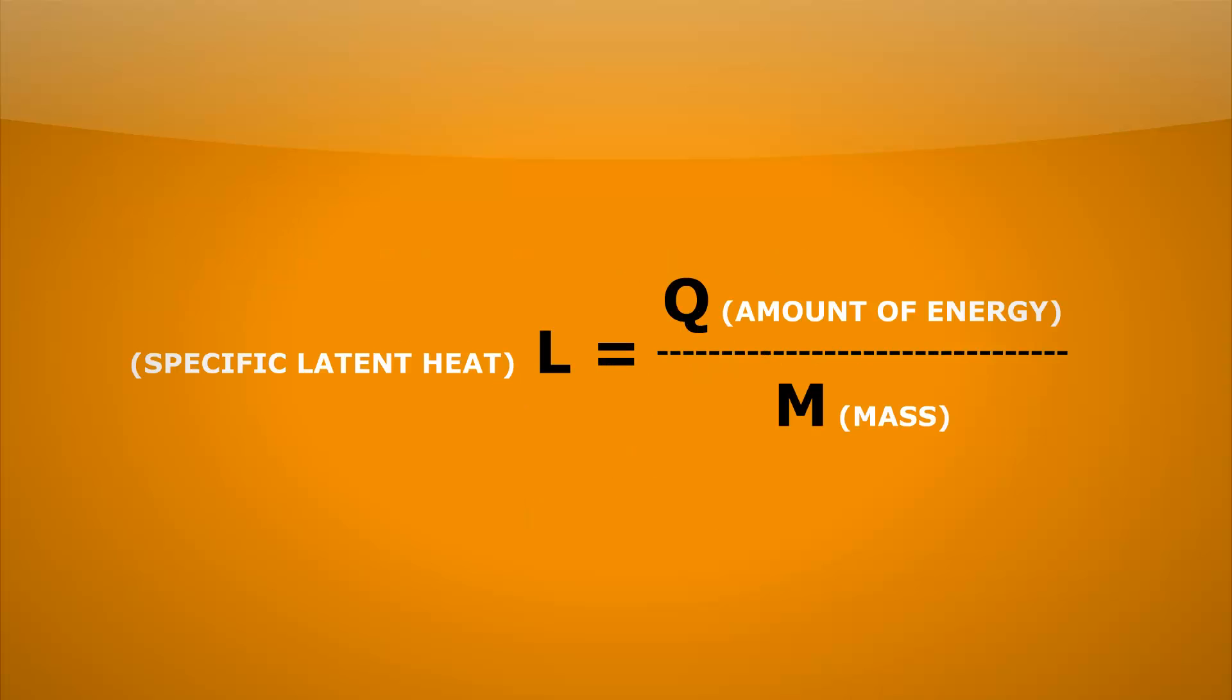So if we think about it, the energy needed to change the state of a given mass is given to us by the mass of that substance times by its specific latent heat. And specific latent heat is not only different for different substances, but has different values for melting and boiling. But don't worry, you're always going to be told that in a question.